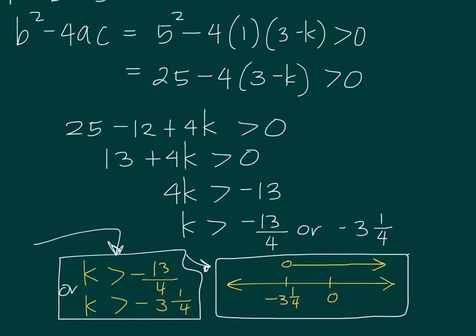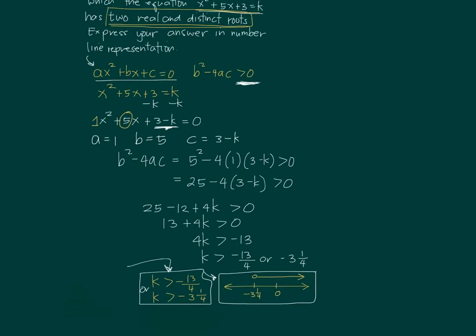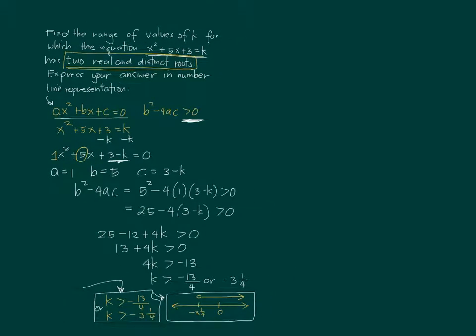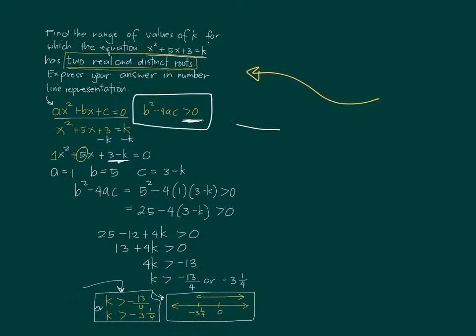Looking at the whole problem: we found the range of values of k for which x squared plus 5x plus 3 equals k has two real and distinct roots. This is an application of the concept of determining the nature of the roots. Sometimes a problem says one real root or no real roots — you need to apply b squared minus 4ac accordingly: greater than 0, equal to 0, or less than 0, depending on the condition.